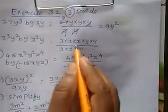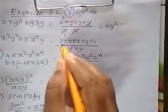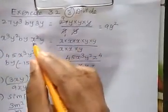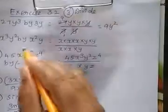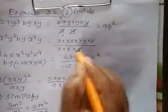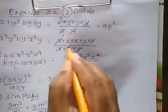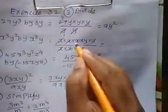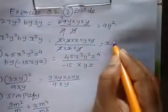The second sum also, I simplify that — split it. x cubed is x into x into x. y squared is y into y, divided by x squared y. So y, y cancel and x, x cancel. The remaining is 1x and 1y.